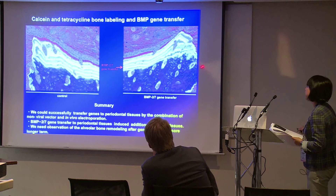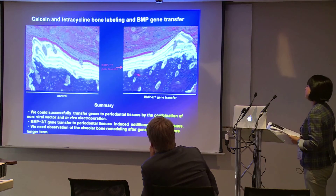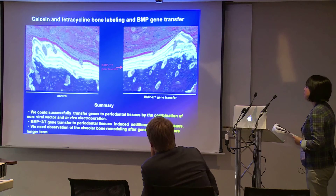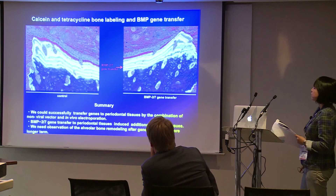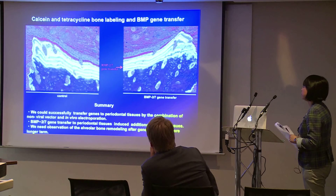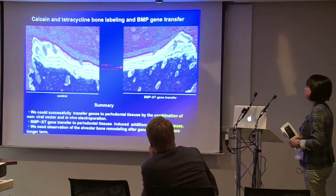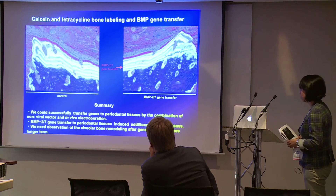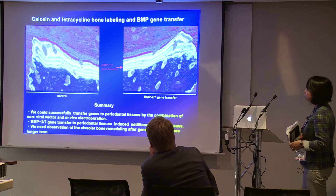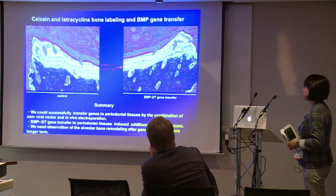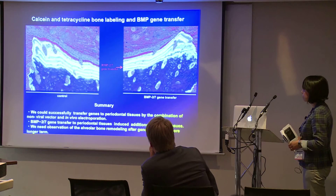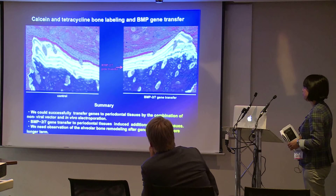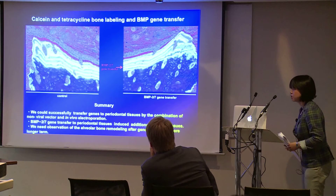In summary, we could successfully transfer genes by combination of non-viral vector and in vivo electroporation. BMP2 and BMP7 gene transfer to periodontal tissue induced additional bone-like tissue sheets. We need observation of bone remodeling after gene transfer for a longer term. Thank you very much.